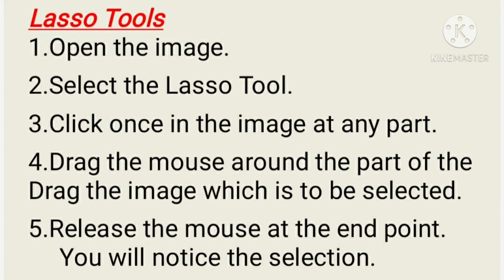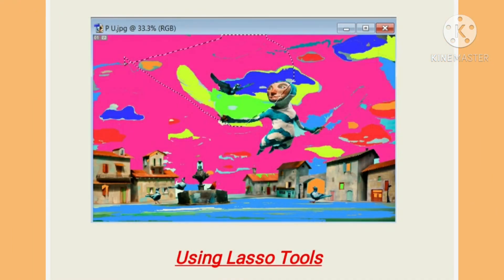Steps to be followed while using the lasso tools: First, open the image. Then, select the lasso tool. Click once in the image at any part. Fourth, drag the mouse around the part of the image which is to be selected. Fifth, release the mouse at the endpoint — you will notice the selection. In this image, we can see the use of the lasso tool.